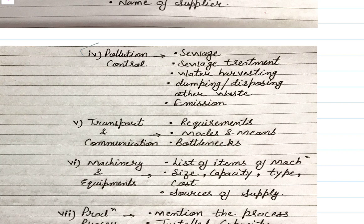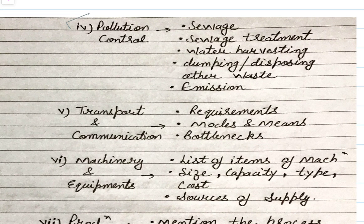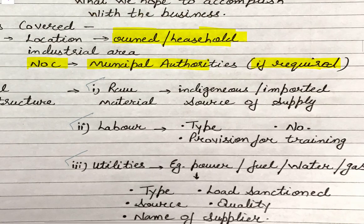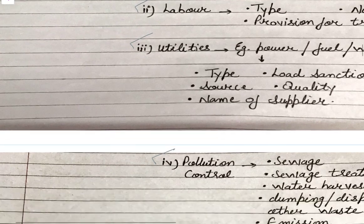After utilities comes pollution control. If your business has pollution-related aspects, you need to detail your sewage system, how you will treat sewage water, water harvesting if applicable, and how you dump or dispose of other types of waste — toxic waste, chemical waste, or any other waste. If you are emitting harmful gases, you must explain how the emission will take place, how high the chimney would be, and how many filters would be applied. All of this is written under pollution control, which is a sub-point under physical infrastructure within the business venture element.